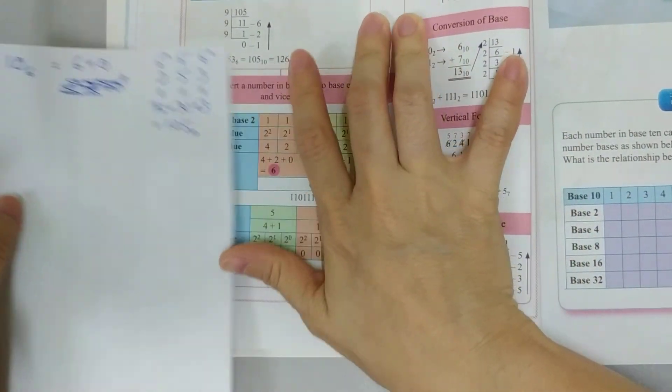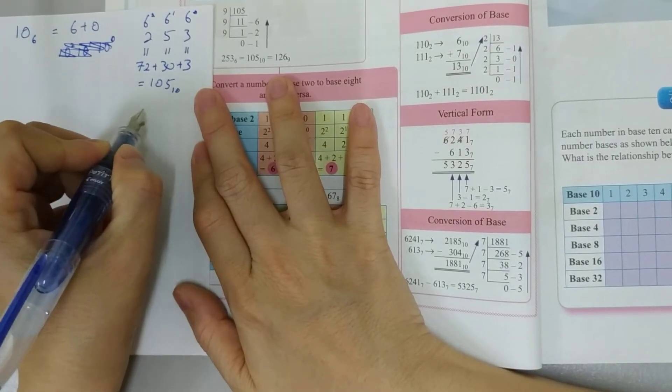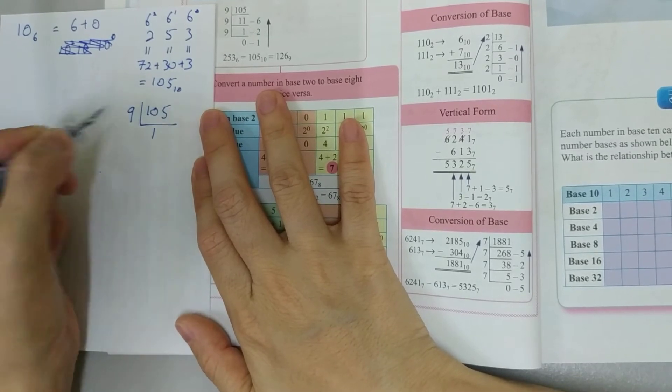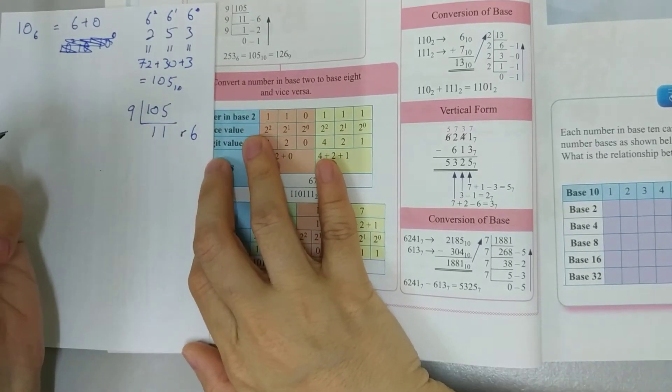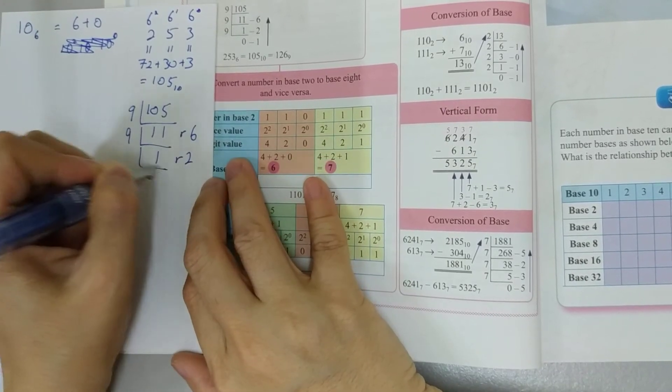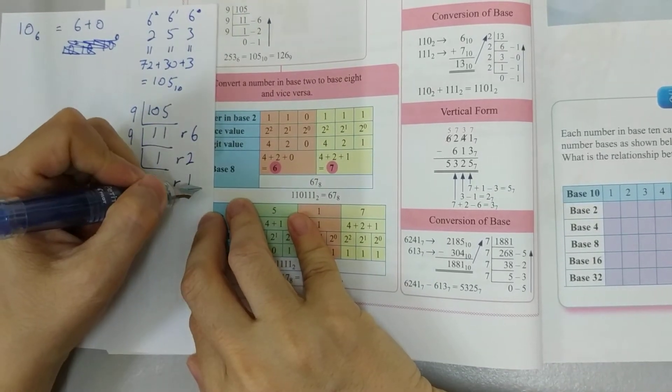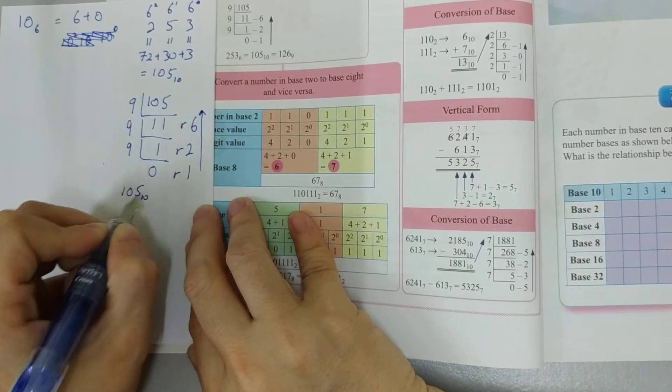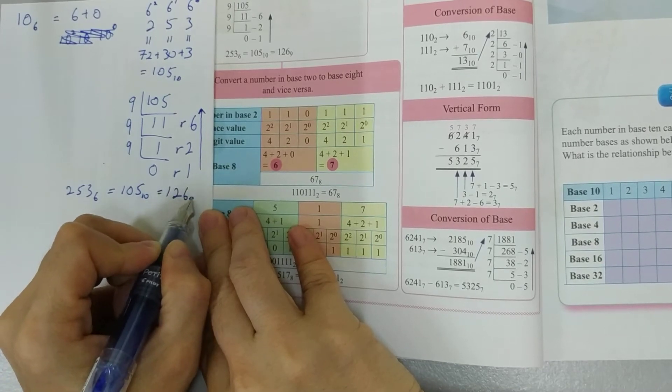Then with this, we try to divide it by 9. So 105 divided by 9, we have 1 here. And then there's 15, another 9, so that means we have a 6, remainder 6. Then we divide by 9 again. So that's 1 with a remainder of 2. Divide by 9 again becomes 0 with a remainder of 1. And we read it, this is the catch here, from the bottom up. So, our 105 base 10, which is also our 253 base 6, is 126 base 9.